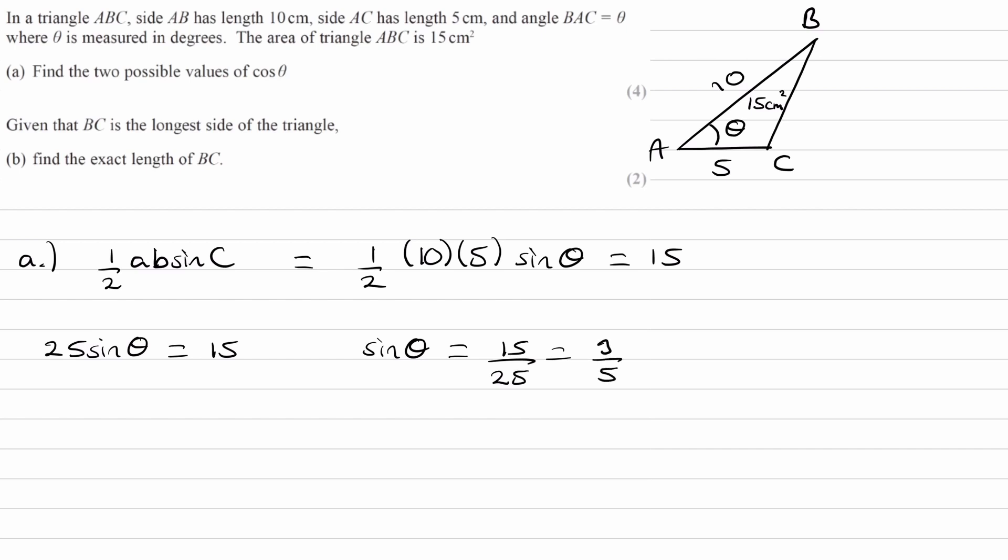We're trying to find the two possible values of cos theta. Right now we have sine theta. We can use sine squared theta plus cos squared theta equals one. Cos squared theta is one minus sine squared theta, or one minus three over five squared. That would be 16 over 25.